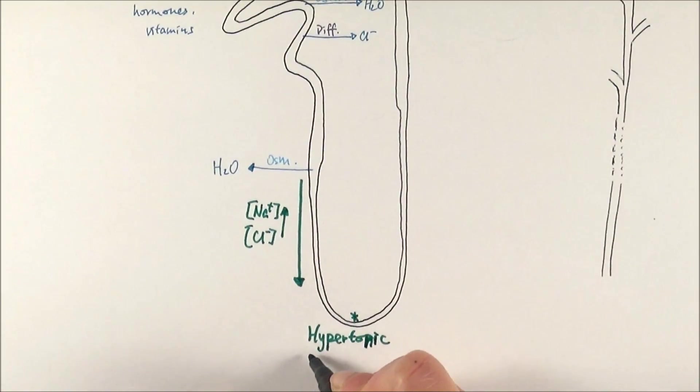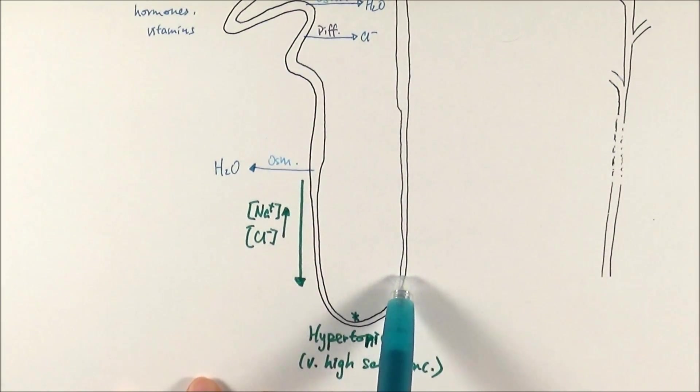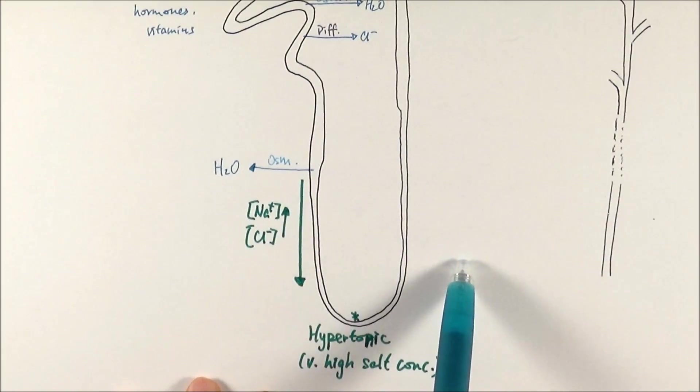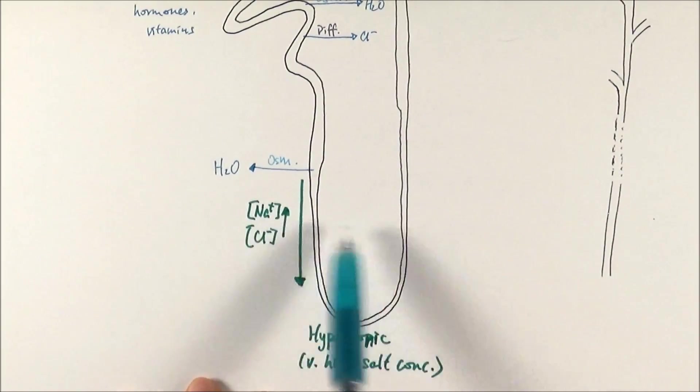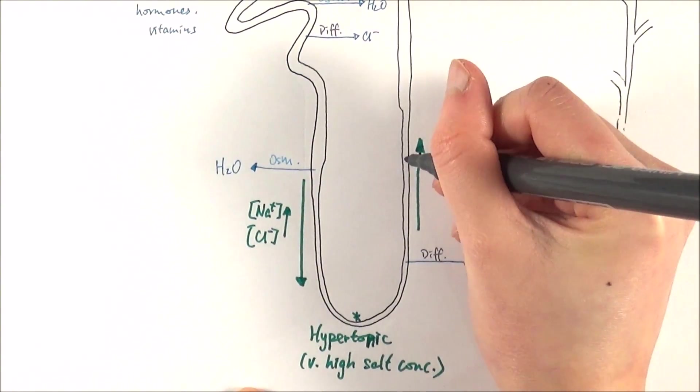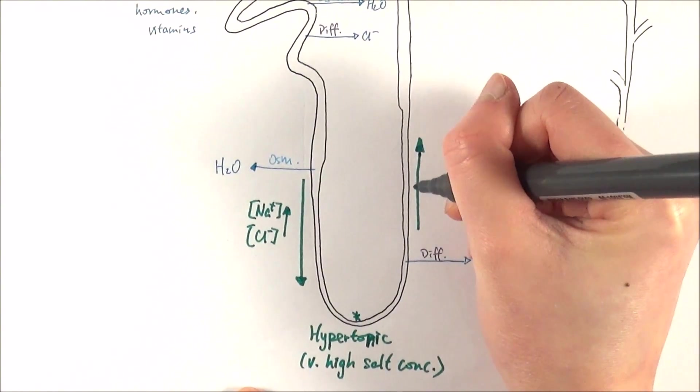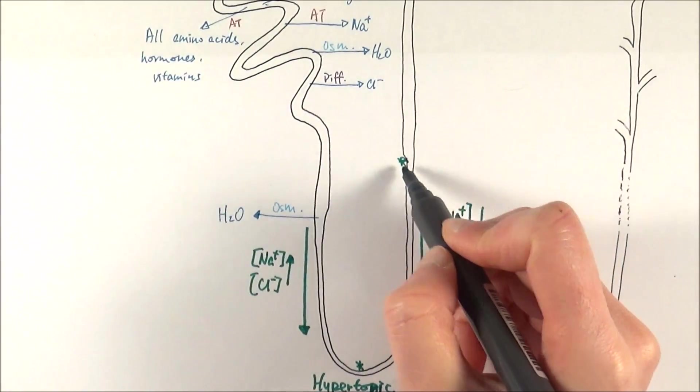Since there is a high salt concentration inside the filtrate compared to outside, the salt can easily move out by diffusion without using any sort of energy. As we go up the ascending limb, the concentration of salt inside the filtrate decreases. Eventually when we get to this point, we say that it is isotonic.